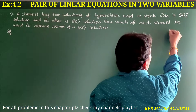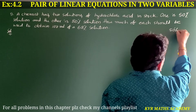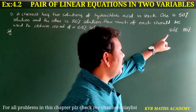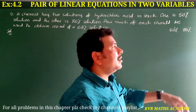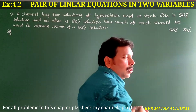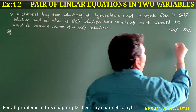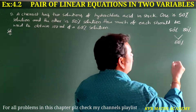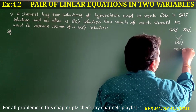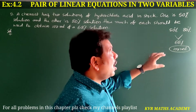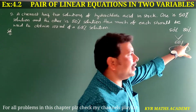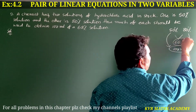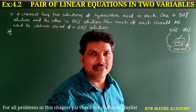The chemist has two solutions: one is 50% hydrochloric acid solution and another one is 80% solution. He has to mix both of these and should get a 68% solution — 100 ml of hydrochloric acid. We need to find how much of each quantity should be added to make a 68% solution.